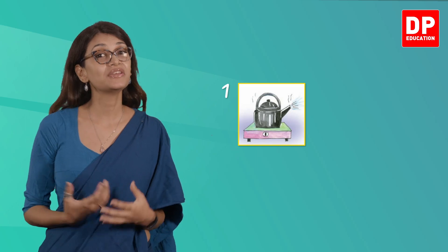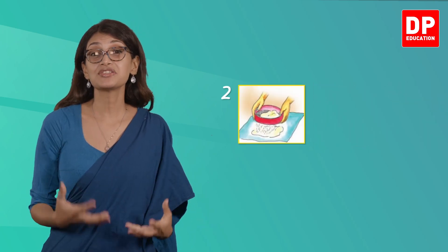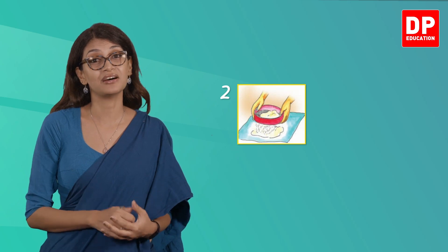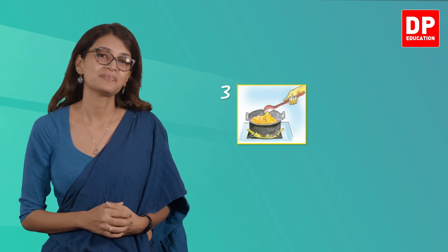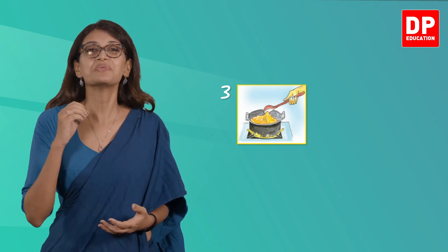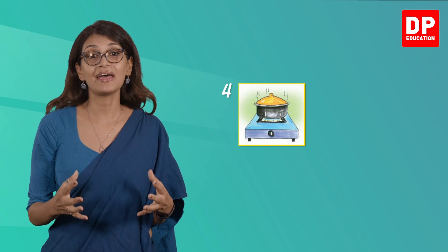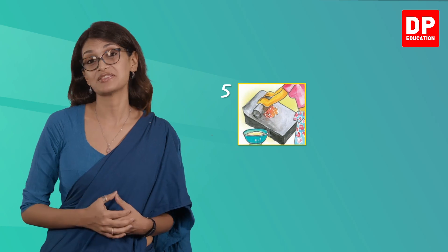Picture one shows a kettle on the stove, so we can use the verb 'boil' — the water is clearly boiling, look at the steam coming out. Picture two shows someone sifting some flour, so the verb is 'sift.' Picture three shows a pan on the stove and someone stirring the food inside, so the verb is 'stir.' Picture four shows another pan on the stove, closed with a lid and steam coming out from the sides — the verb to describe this action is 'simmer.'